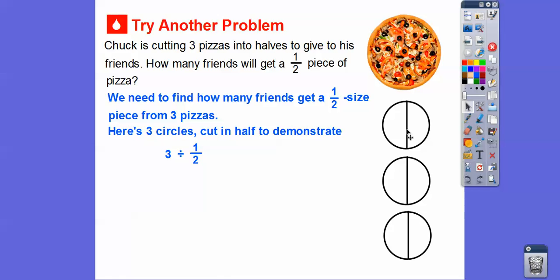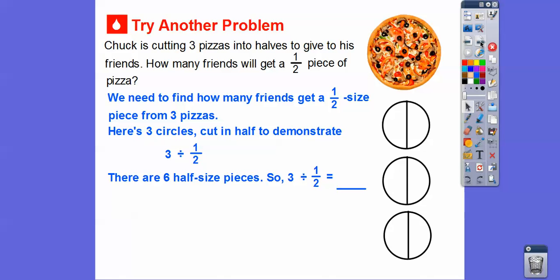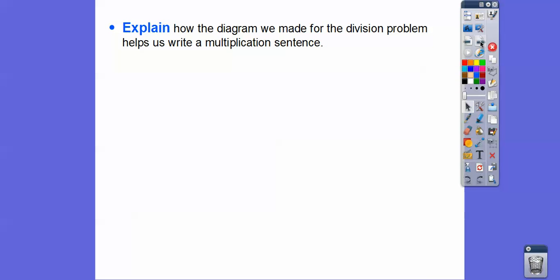We're cutting each one into two pieces. So we have half and half, half and half, and half and half — three pizzas. So three divided by one-half gives us six half-sized pieces. Six friends will get a half-sized pizza. Piece of cake — or piece of pizza!